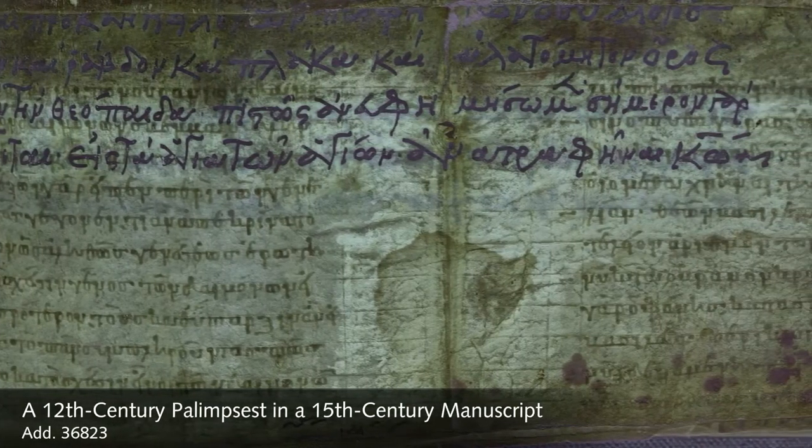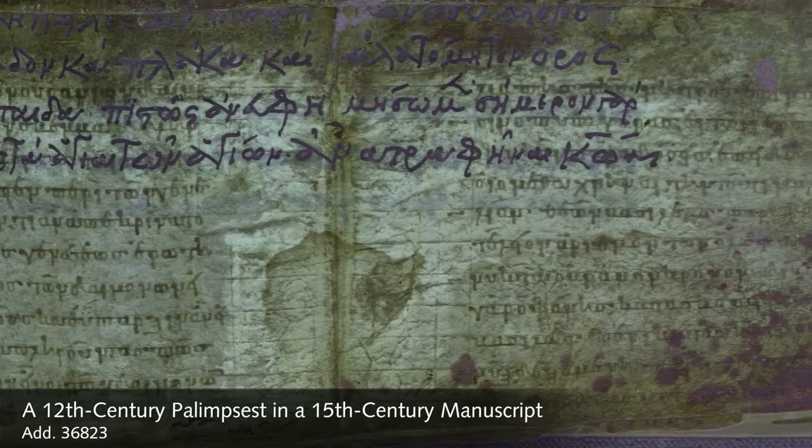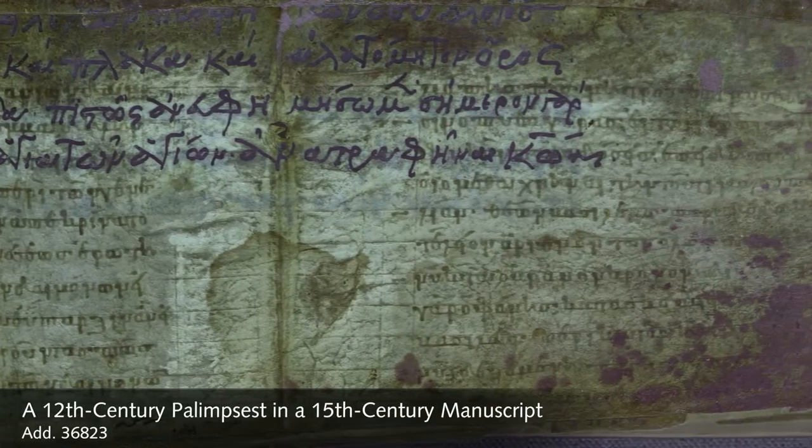We found using multispectral imaging on this manuscript that there are three different texts within the original manuscript. The parchment palimpsests that have been used are partial folios. Quite often they've been inserted to improve the strength of the original folios.